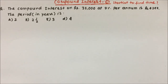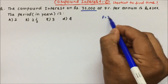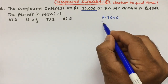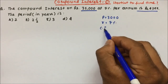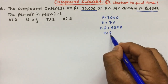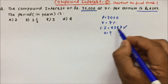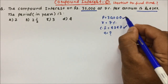Hi friends, our today's topic is compound interest, and this is the 7th video on compound interest. In this video we are going to learn a shortcut to find out the time in compound interest. The question is: the compound interest on rupees 30,000 — principal is 30,000, rate is 7% per annum — is 4347. They are asking in how much time the compound interest will be 4347 if 30,000 rupees is invested at the rate of 7%.